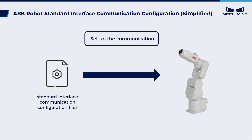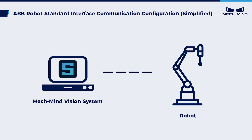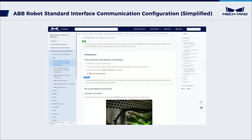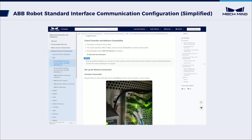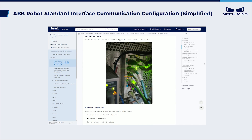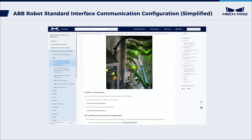Now we have automatically loaded the standard interface program files to an ABB robot. The robot can proceed to send commands to and request visual results from the Vision System. You can refer to our documentation for more ABB robot standard interface configuration operations.